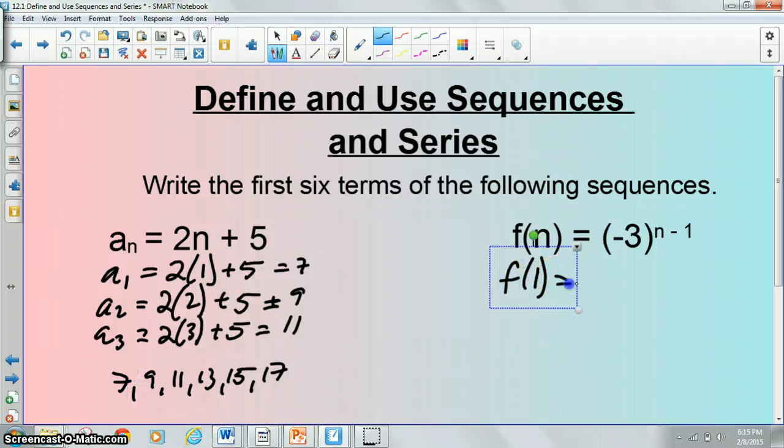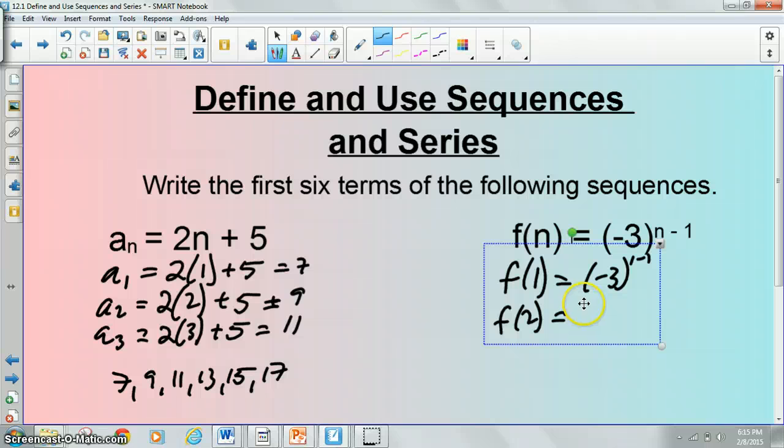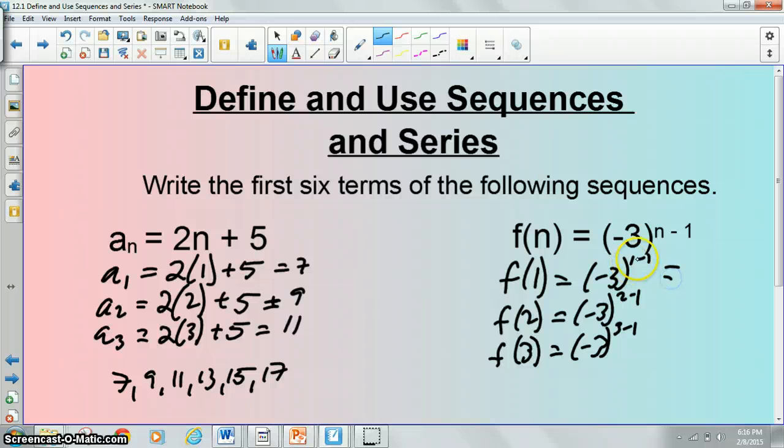f of 1 is how you'd write the first term of that sequence. It's equal to negative 3 to the 1 minus 1. f of 2 is equal to negative 3 to the 2 minus 1. f of 3 is equal to negative 3 to the 3 minus 1. And so on and so forth. Obviously, you do that six times. Your first term, negative 3 to the 0th, is 1, because anything to the 0 is 1. Negative 3 to the first power is negative 3. Negative 3 to the second power is 9. Your third term is going to be negative 27. Positive 81, and so on and so forth.